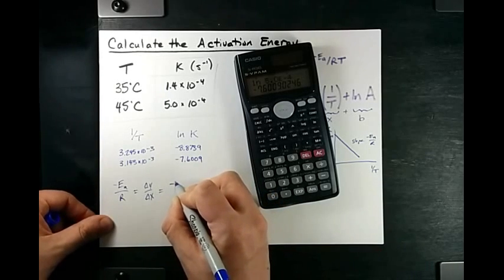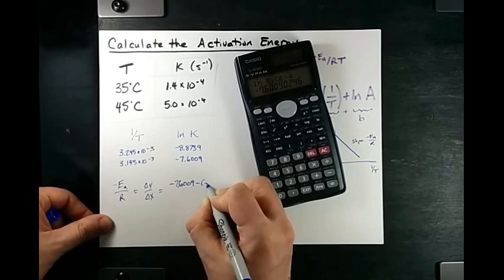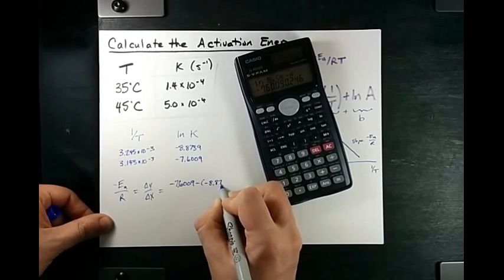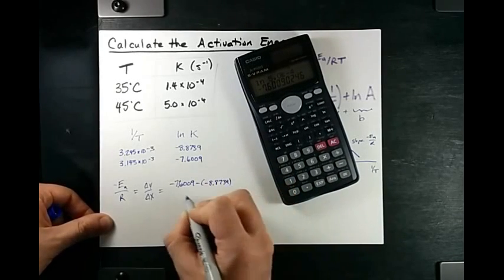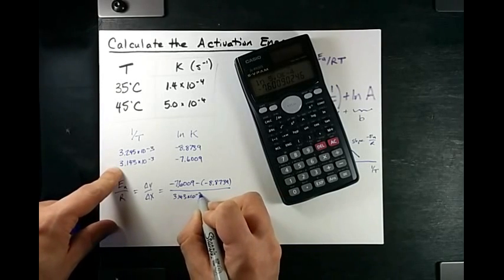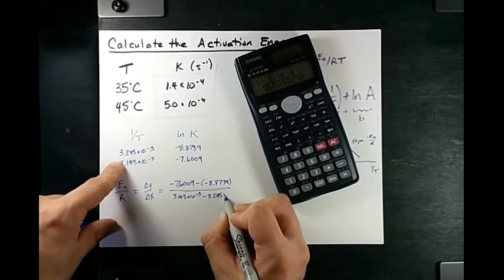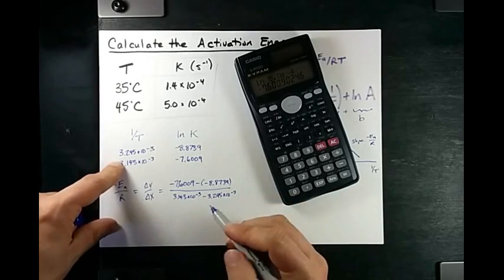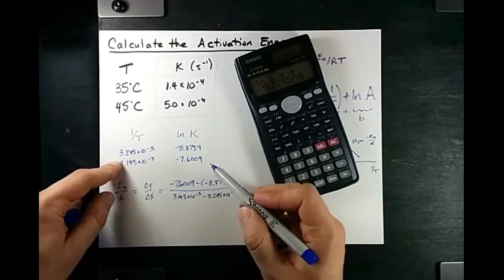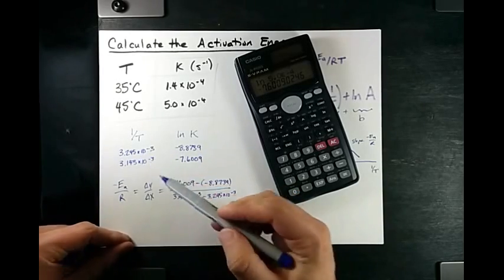That's negative 7.6009 minus negative 8.8739 over 3.143 times 10 to the negative 3, minus 3.245 times 10 to the negative 3. Hopefully that didn't seem like magic to you. y2 minus y1 over x2 minus x1. You did it in grade 9, or earlier probably.